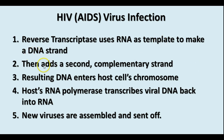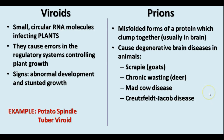The RNA is a template to make the DNA. A second complementary strand is made, and then it enters the cell's chromosome and transcribes the viral DNA back into RNA, and new viruses are assembled and sent off to infect more cells. Other infective particles that are not cells include viroids and prions. Viroids are circular RNA molecules that infect plants and cause errors in the regulatory system.